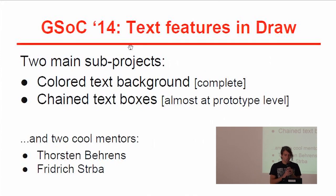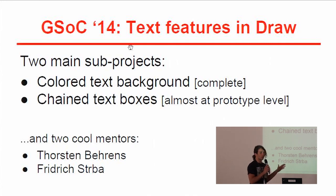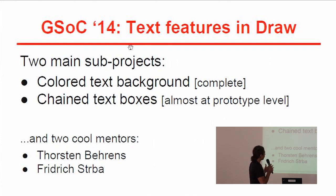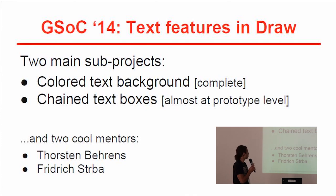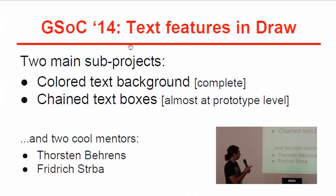The project presented this year was a proposal that already existed on the GSoC project pages. It consists of two main loosely related sub-projects. One was enabling color text background in Draw, which was completed. And another, at almost a prototype level, was chain text boxes. I will talk briefly about these two.